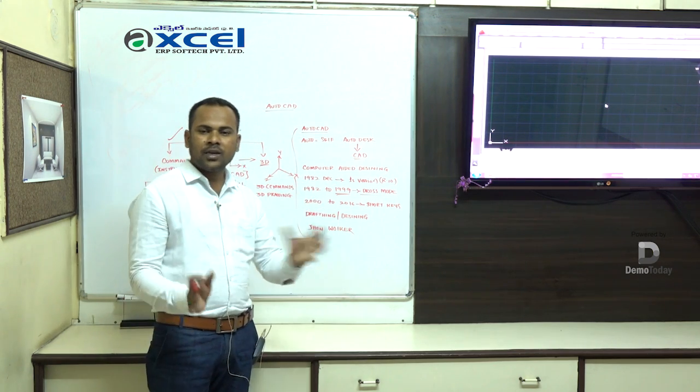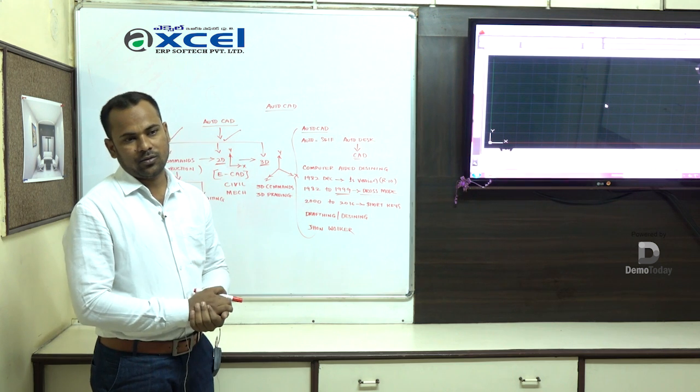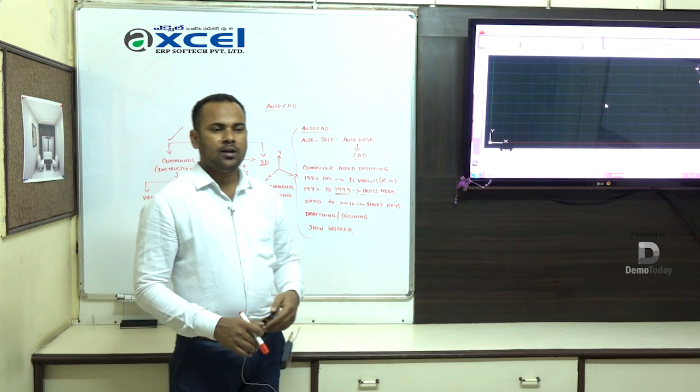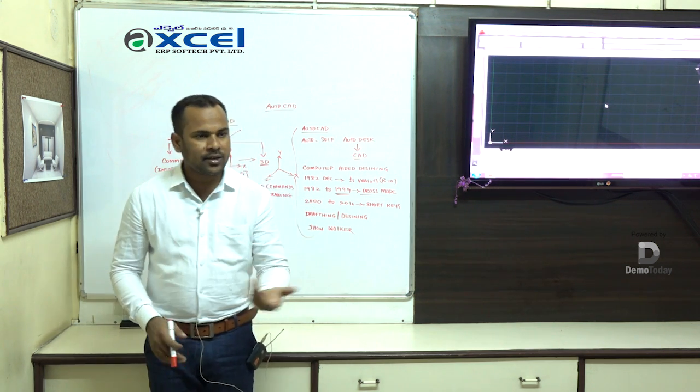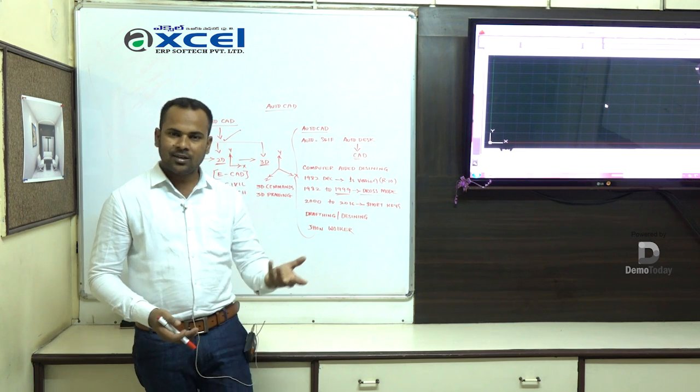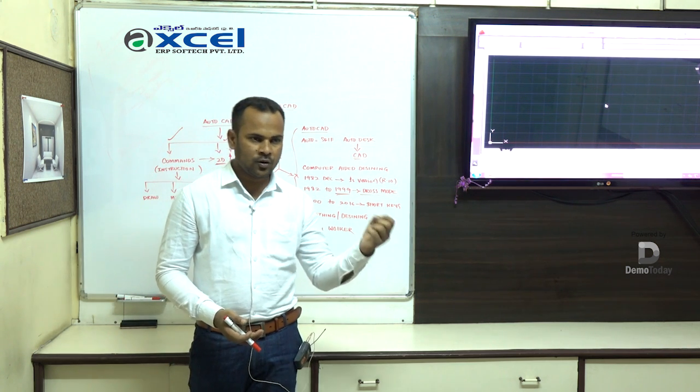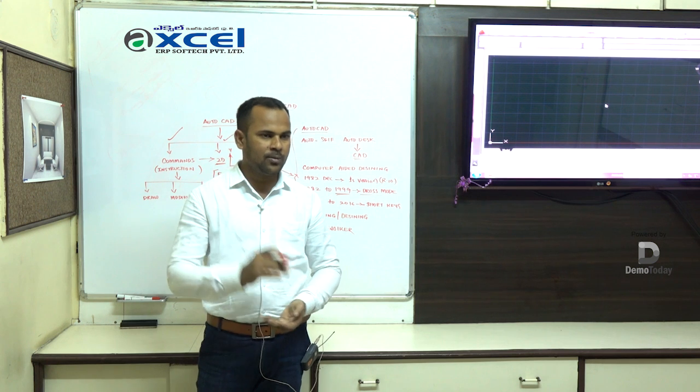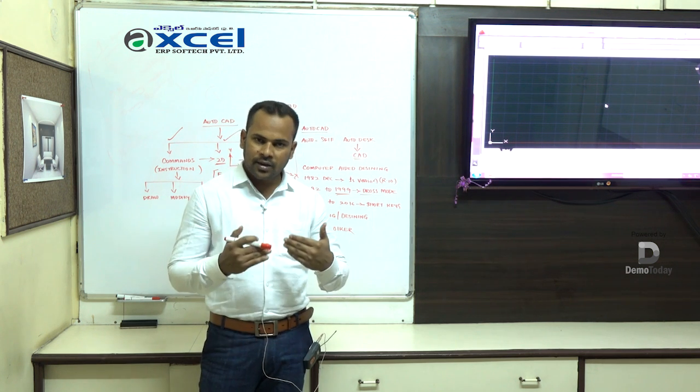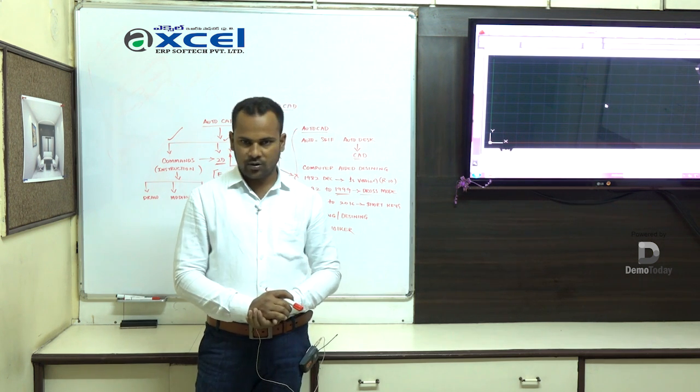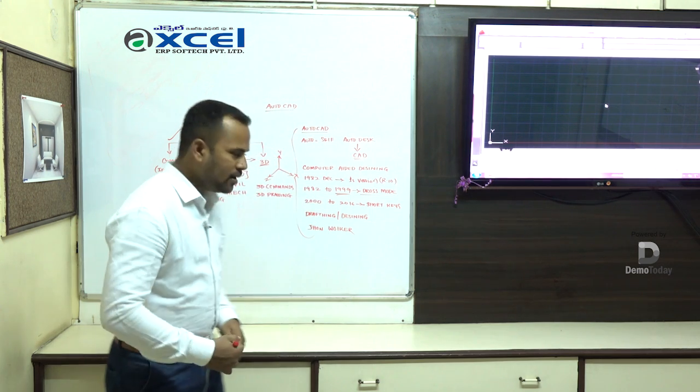In this 3D, we can apply real materials also. What are 3D materials? Suppose wood, stone, steel materials. In this 3D, we can apply the real material. That is 3D.